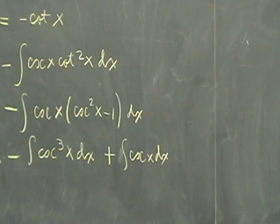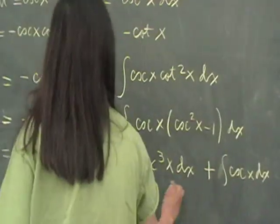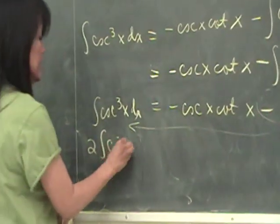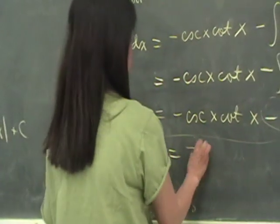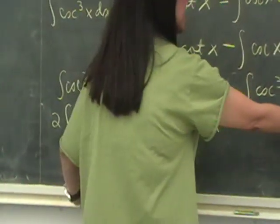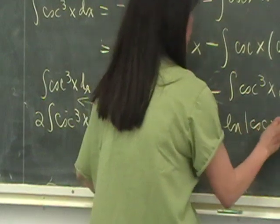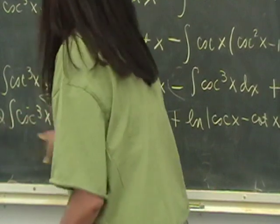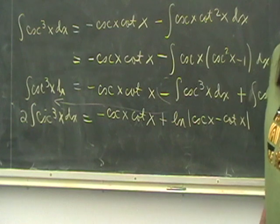So then this will be this. This one you can move over here, right? So you have two integral of cosecant cubed x dx. No, but it's negative, correct? Is equal to negative cosecant x cotangent x. Now what is the integral of cosecant x dx? We saw that already. Is ln of cosecant x minus cotangent x, right? Yes. So therefore, you divide by two and you get the answer for the integral of cosecant cubed x.